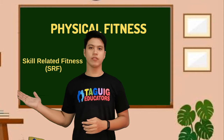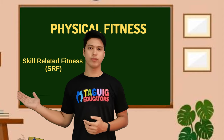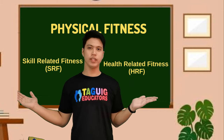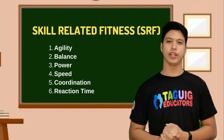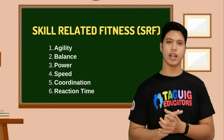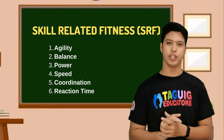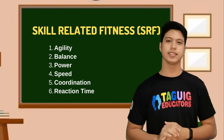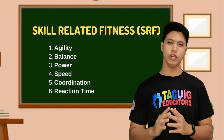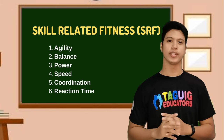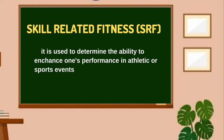These components are grouped into two: skill-related fitness or SRF, and health-related fitness or HRF. Skill-related fitness or SRF are agility, balance, power, speed, coordination, and reaction time. It is used to determine the ability to enhance one's performance in athletic or sports events.